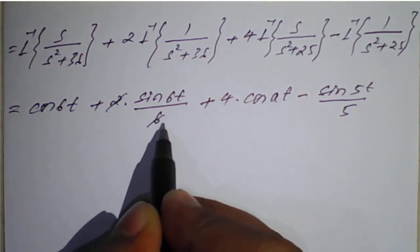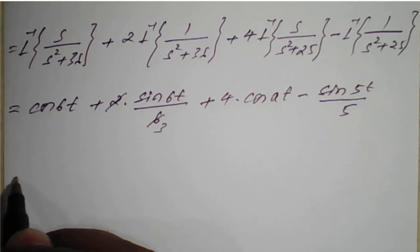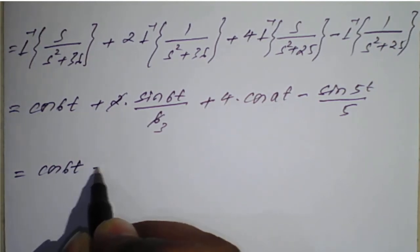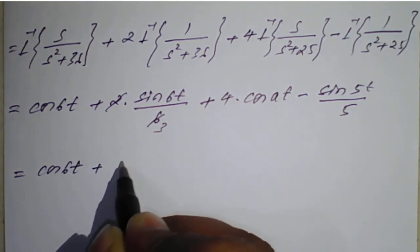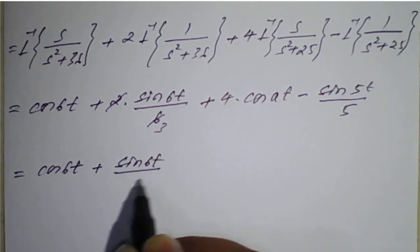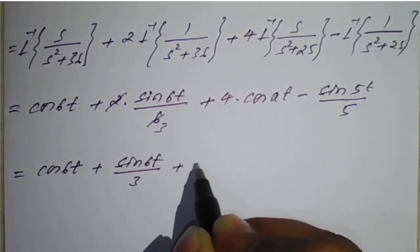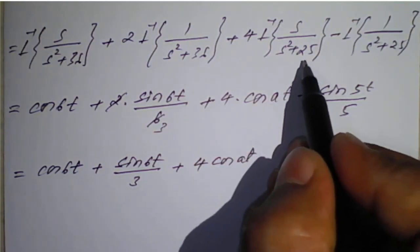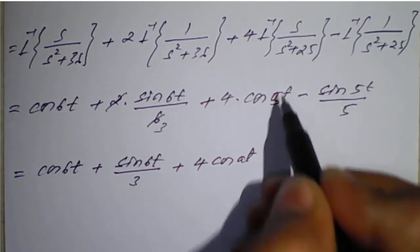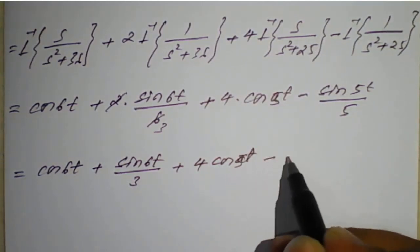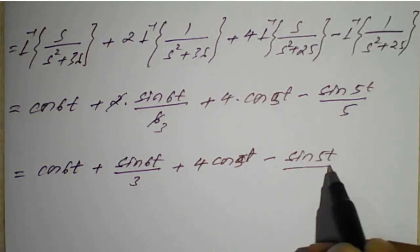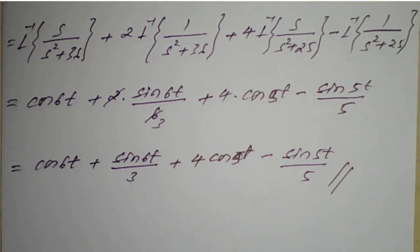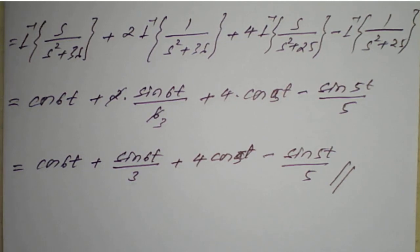Finally, rearranging the result: cos(6t) plus sin(6t) divided by 3, plus 4 cos(5t) minus sin(5t) upon 5. In this way, we first simplify and rearrange into standard forms, then apply the standard inverse Laplace transform formulas from the table.